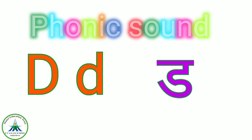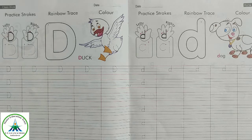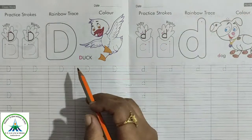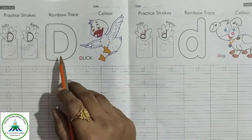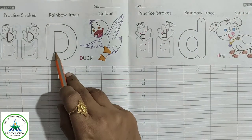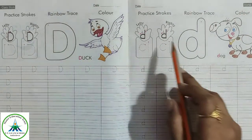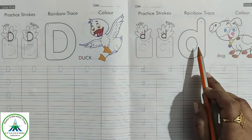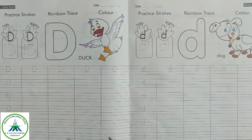Say again — D says D. Hey kids, now let's write capital letter D and small letter D.